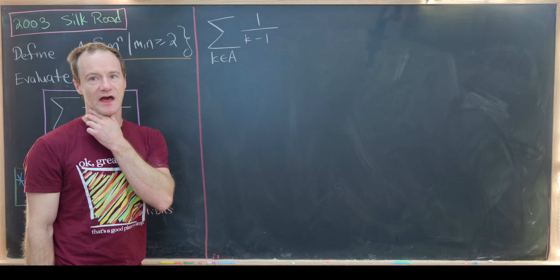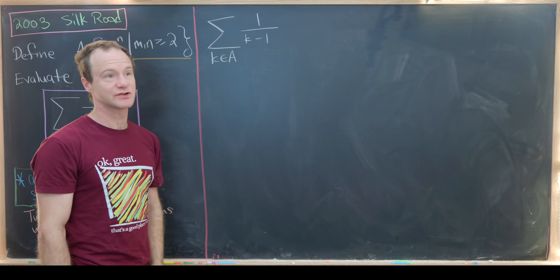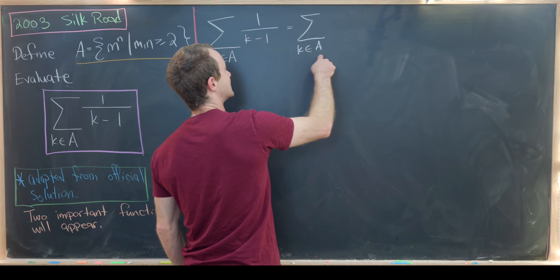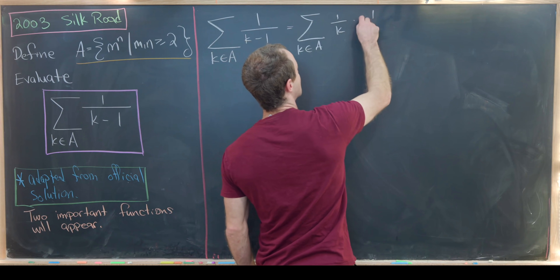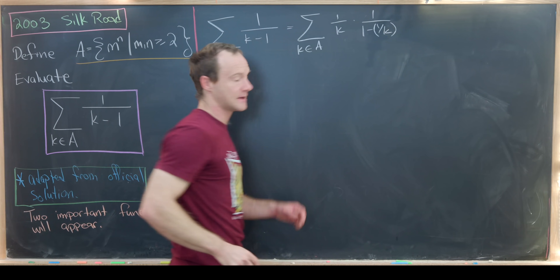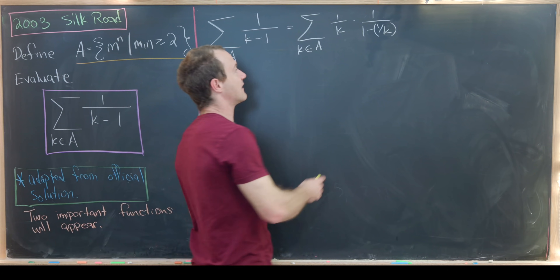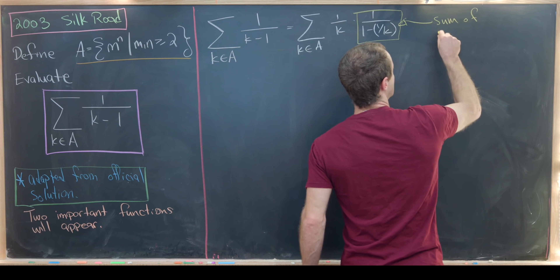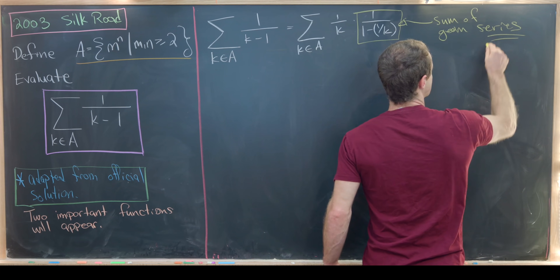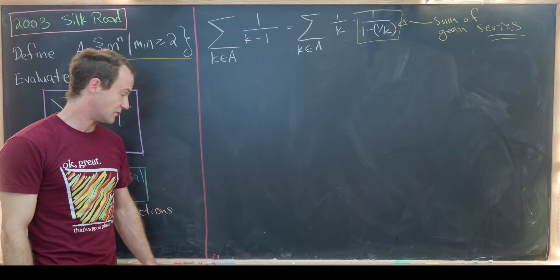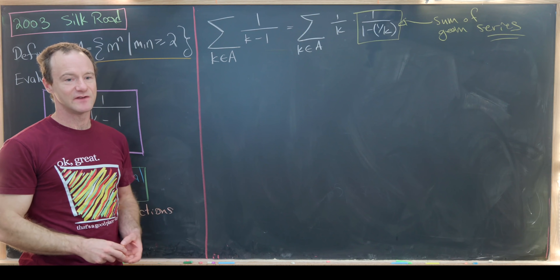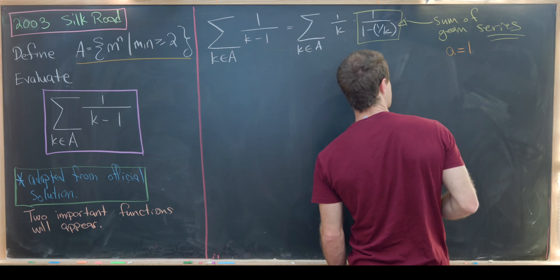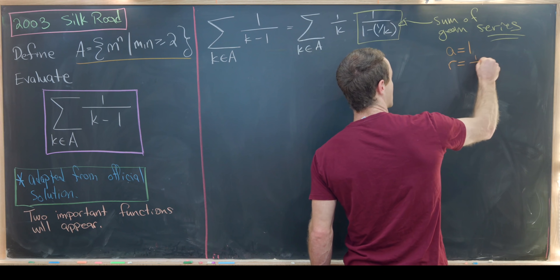Recall that the sum of the geometric series has the form: starting term over 1 minus the common ratio, where that common ratio is generally less than 1. So let's see what we can do to make that work. What if we just factor a k out of the denominator? That gives us the sum over all elements k from A of 1 over k times 1 over 1 minus 1 over k. What we've created right here looks a lot like the sum of a geometric series, where the starting term a is 1 and the common ratio is 1 over k.